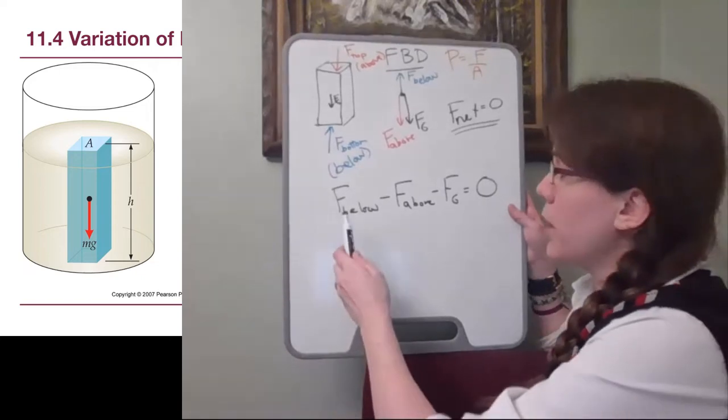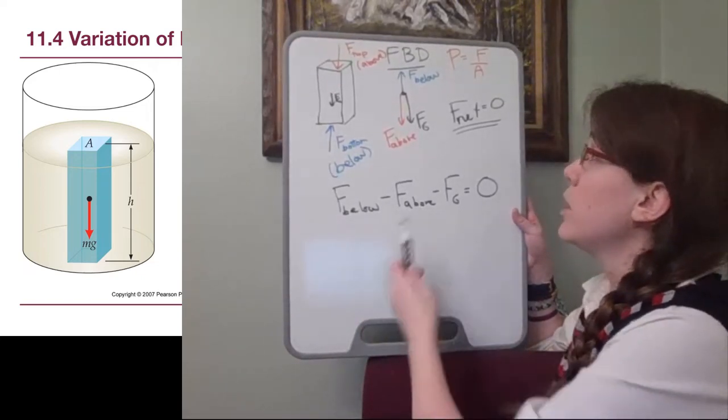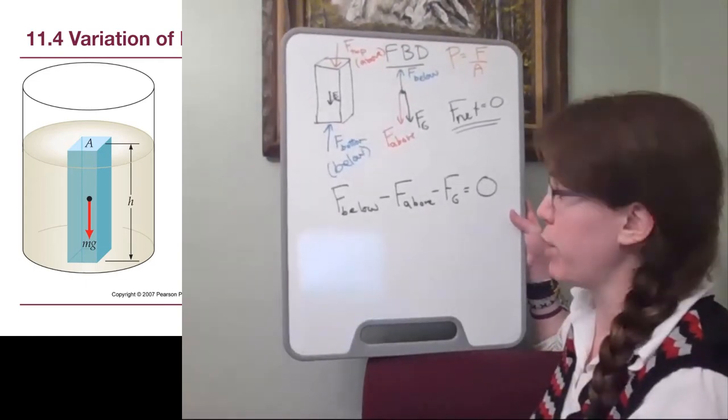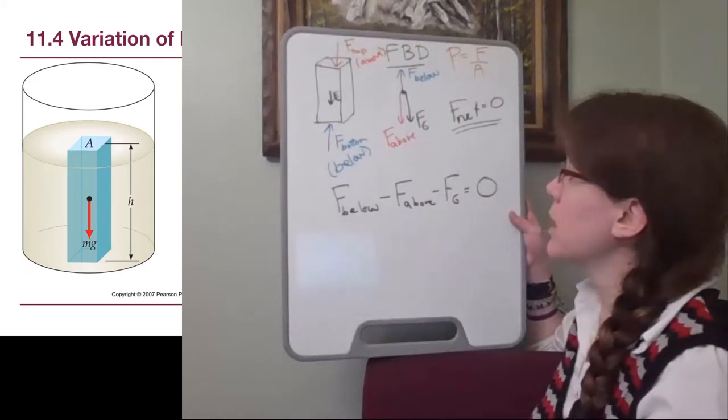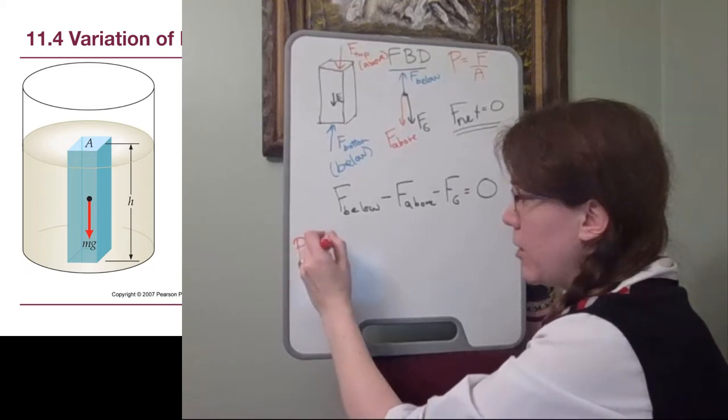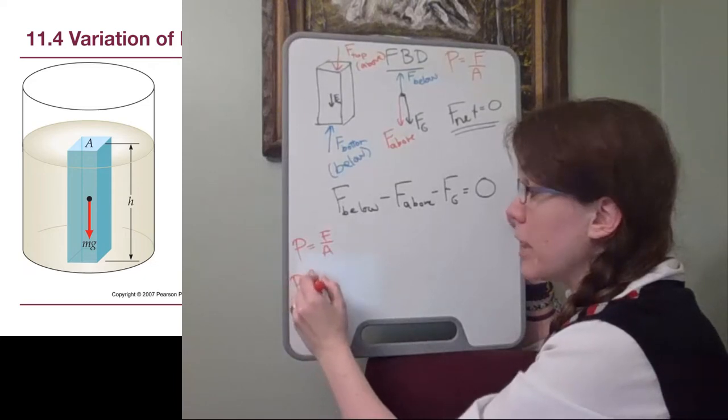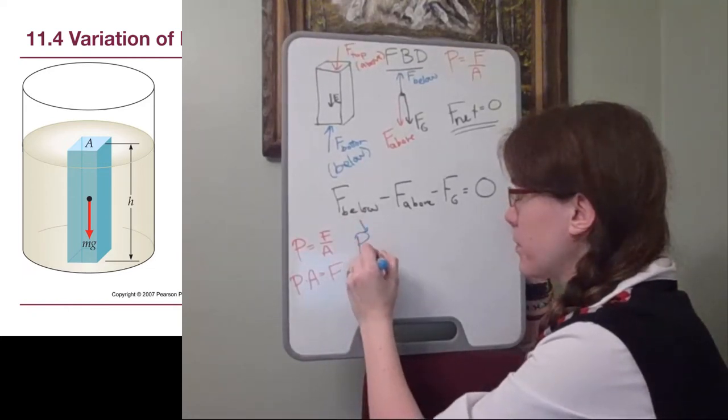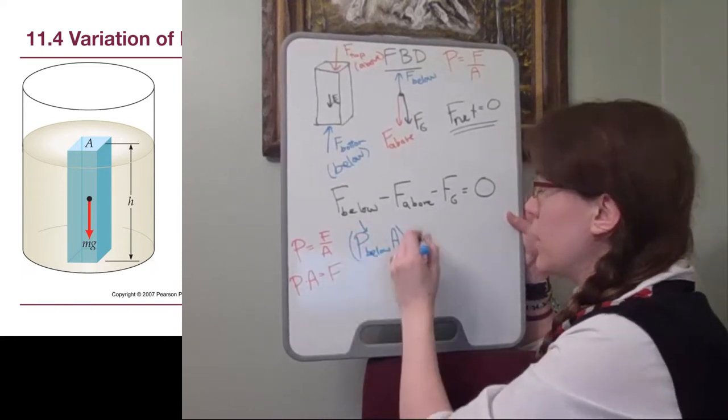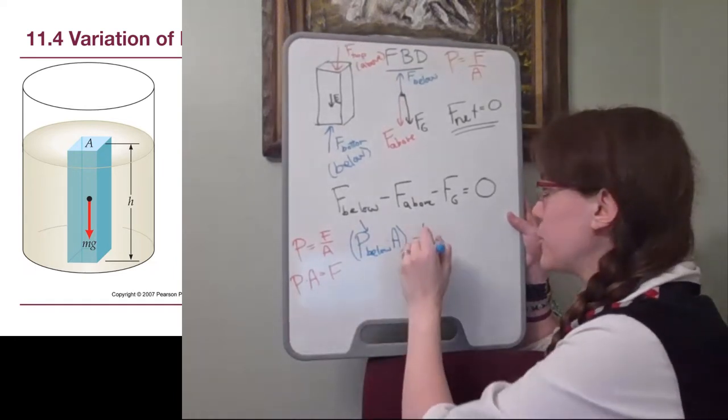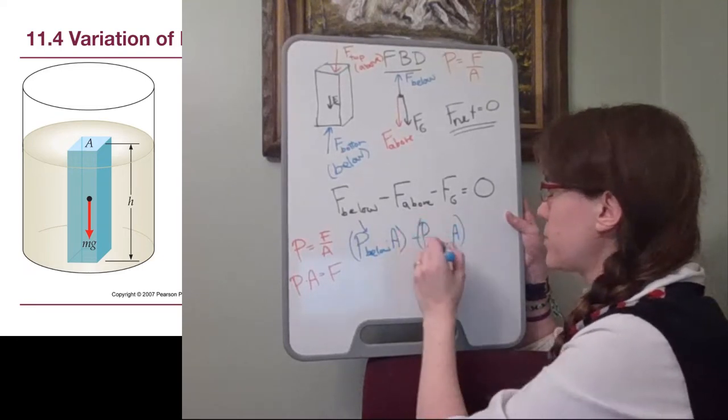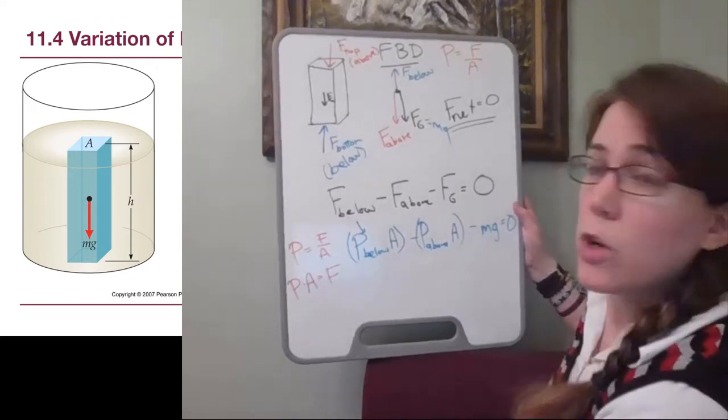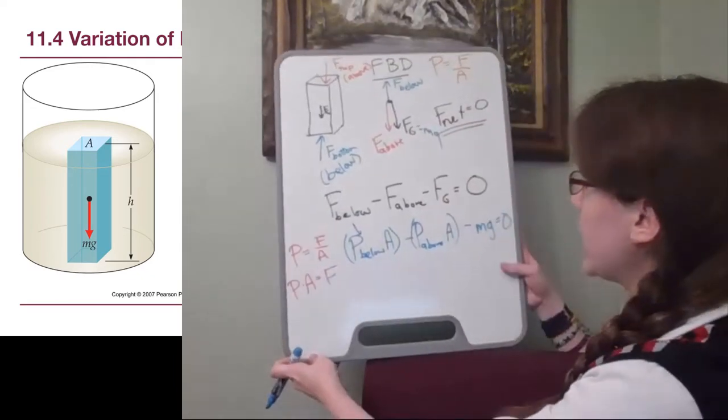Now I want us to think about a couple of key things. The force below and force above, they're really coming from pressure. Because pressure is force per area, if we multiply both sides by area, then instead of force below we can rewrite that to be the pressure below times the surface area. For the force above we could do the same thing, the pressure above times the surface area. And then gravity we know is mg.